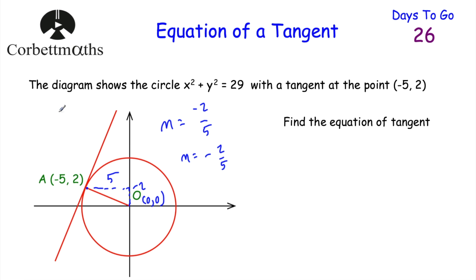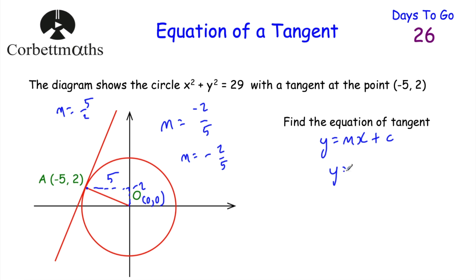In terms of the tangent, its gradient m is the negative reciprocal of negative two fifths. The gradient is already negative, so the negative reciprocal is positive, and the reciprocal of two fifths is five halves. So the gradient of the tangent is 5 over 2. The equation of the tangent is in the form y equals mx plus c, and we know its gradient is five halves, so y equals five halves x plus c. We just need to find c.